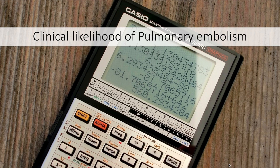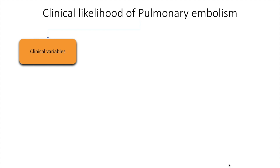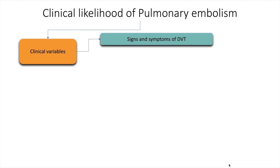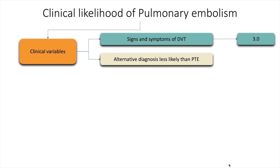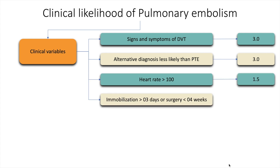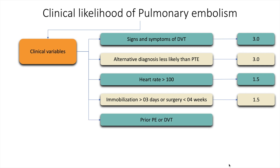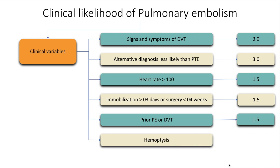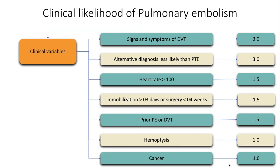The clinical likelihood of pulmonary embolism may be calculated based on the Wells point score system, which is slightly different from the Wells score for DVT. Clinical variables include signs and symptoms of DVT (three points), an alternative diagnosis less likely than PTE (three points), heart rate more than 100, immobilization for more than three days or surgery in less than four weeks, and prior pulmonary embolism or DVT (all 1.5 points each). Hemoptysis and cancer carry one point each. A score of more than four indicates a high likelihood of pulmonary embolism.